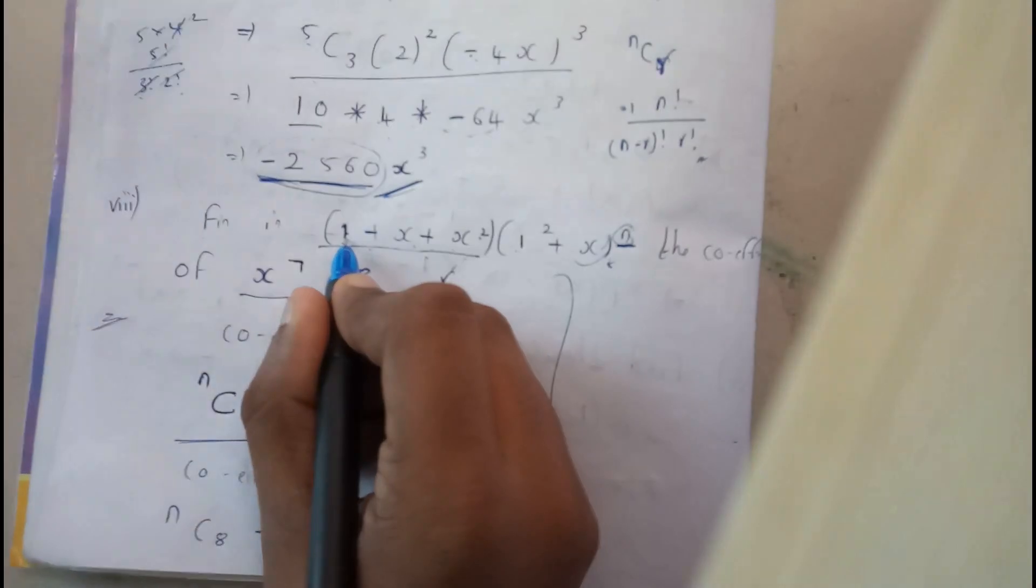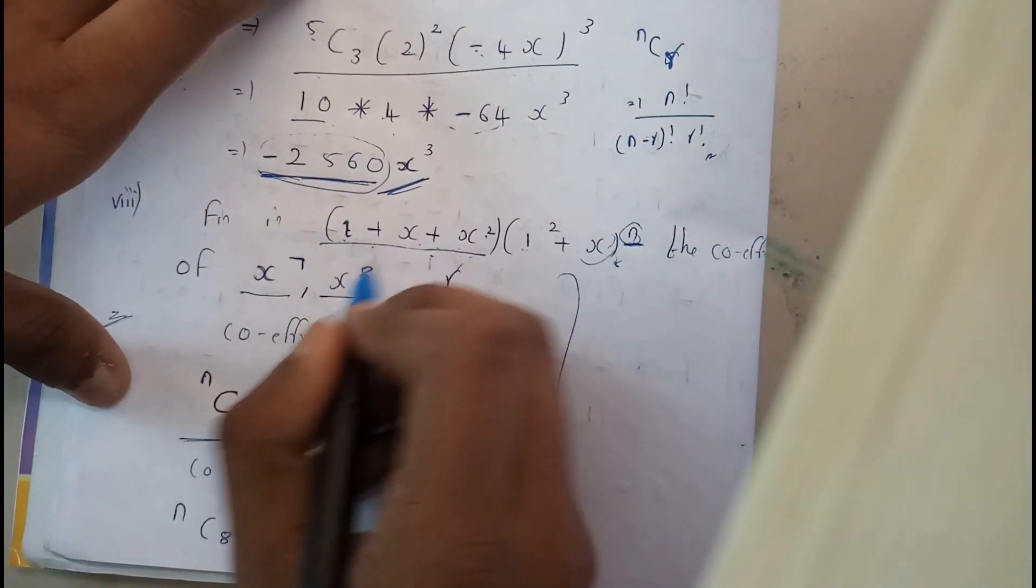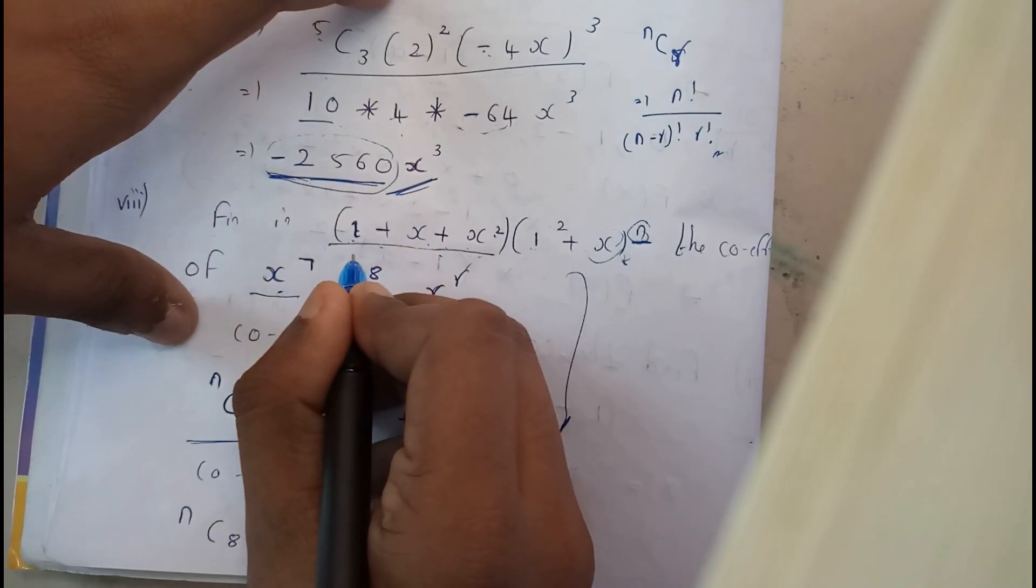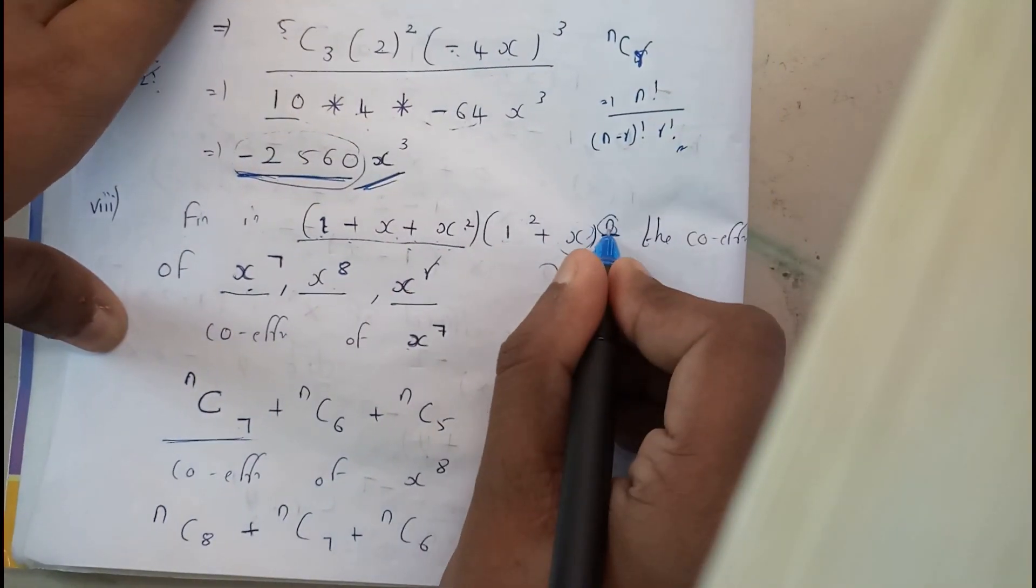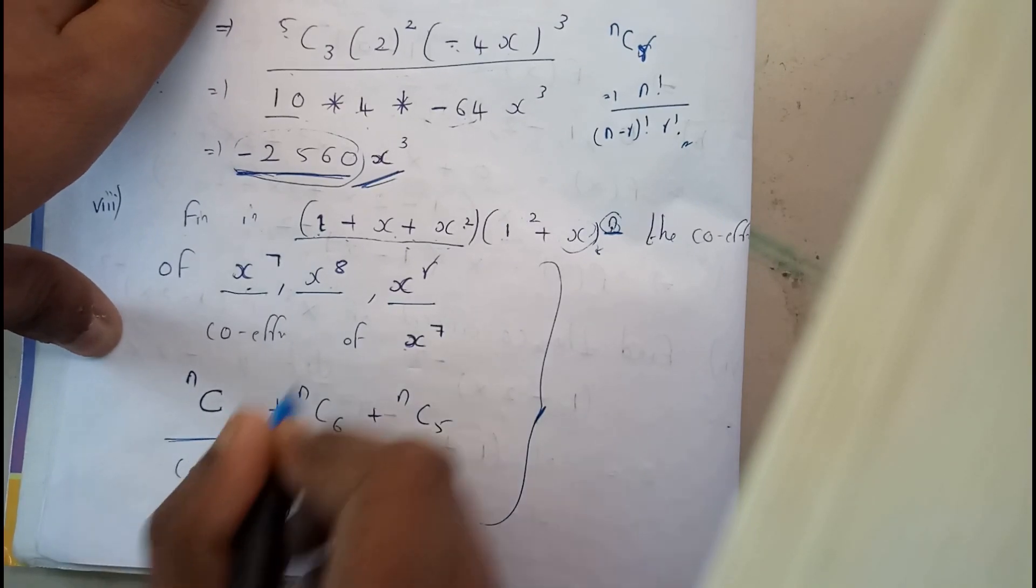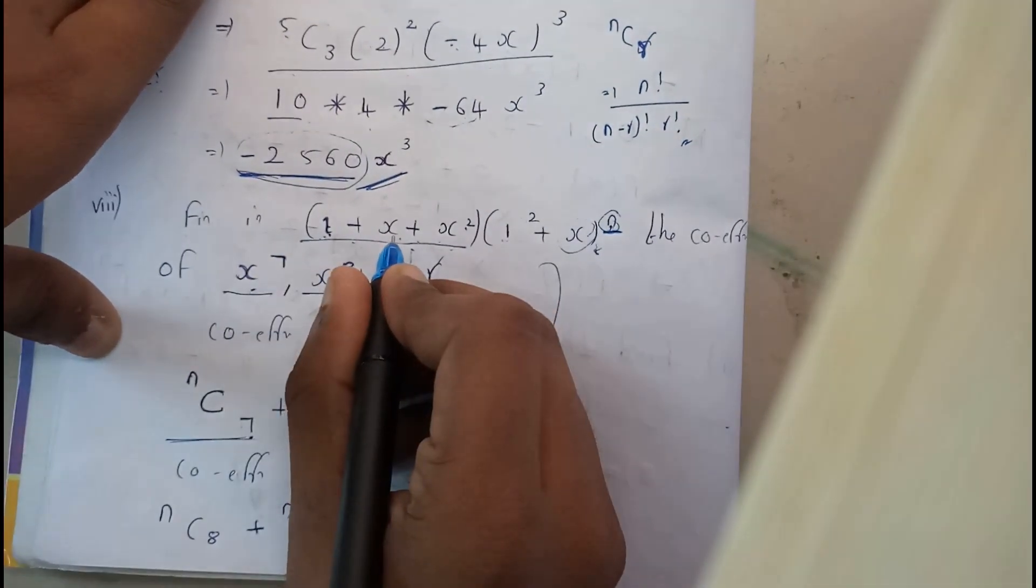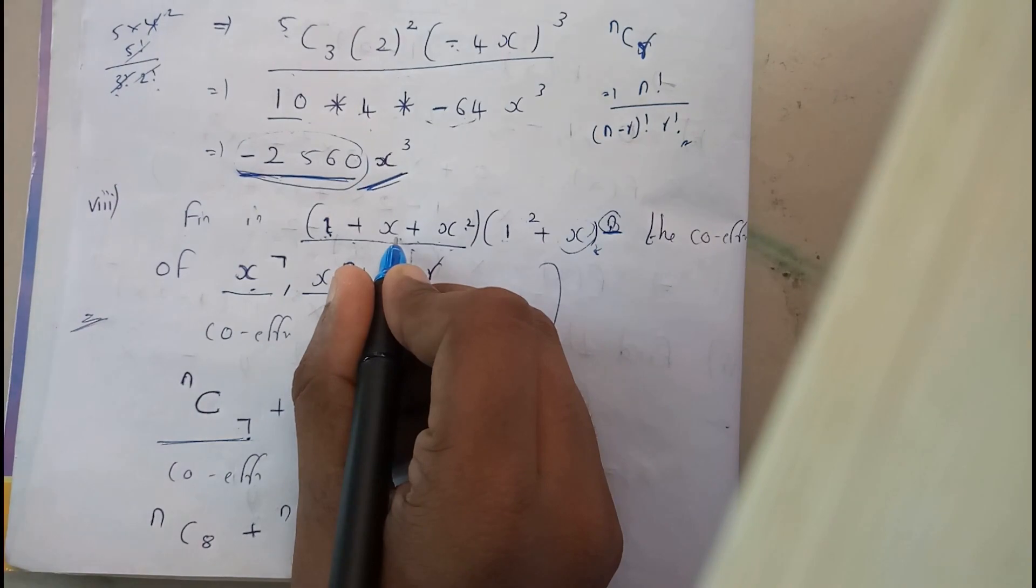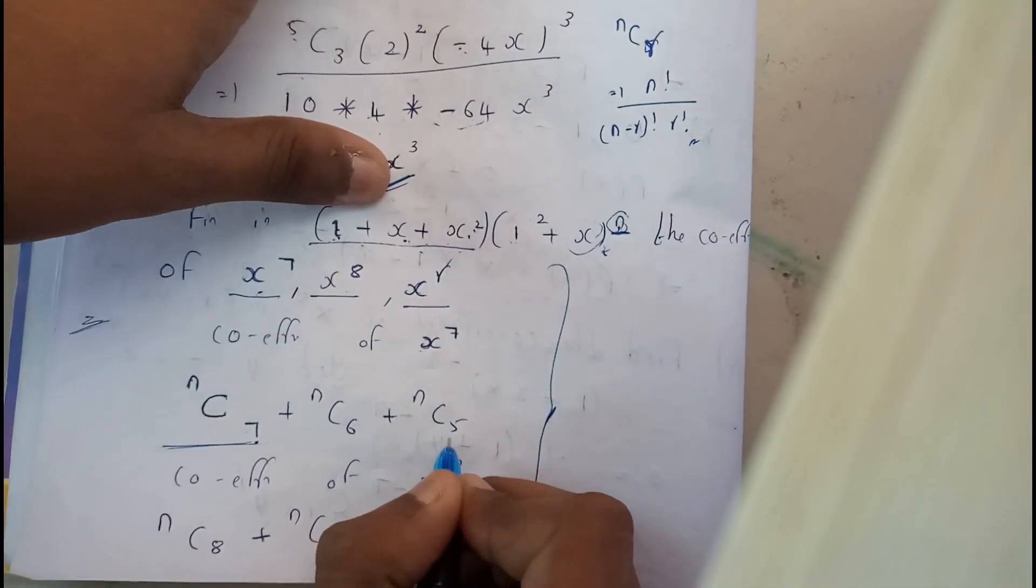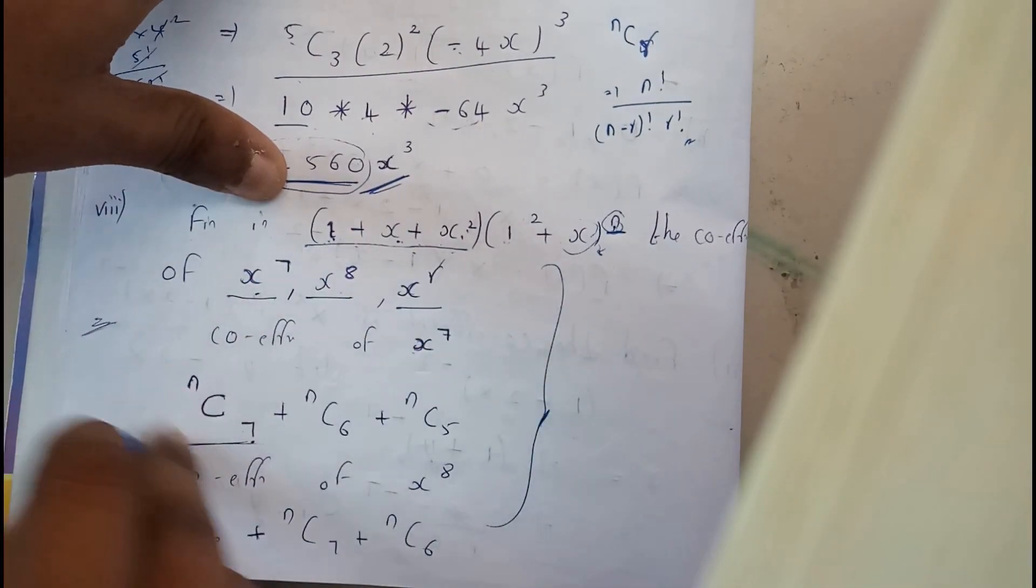So, here I need how many x terms to get x power 7. I need x power 7 to multiply it with. So, out of N, I need 7 x's. So, I can get here x power 7. Like that here, I need only 6, so NC6. Here, I need only 5, so NC5.